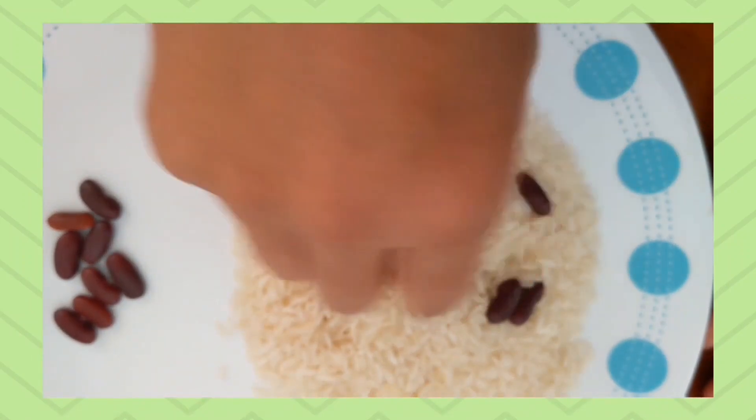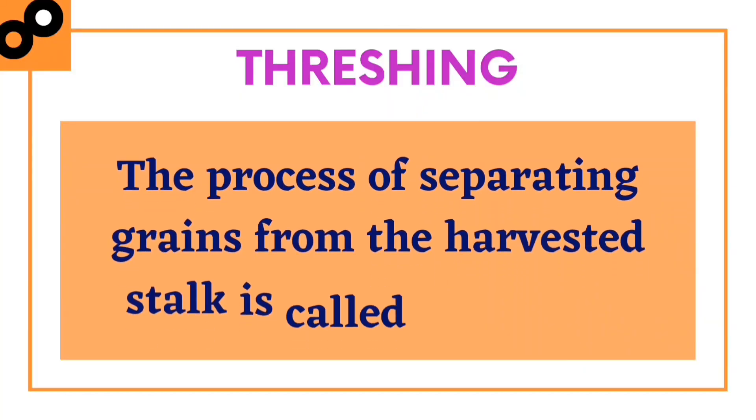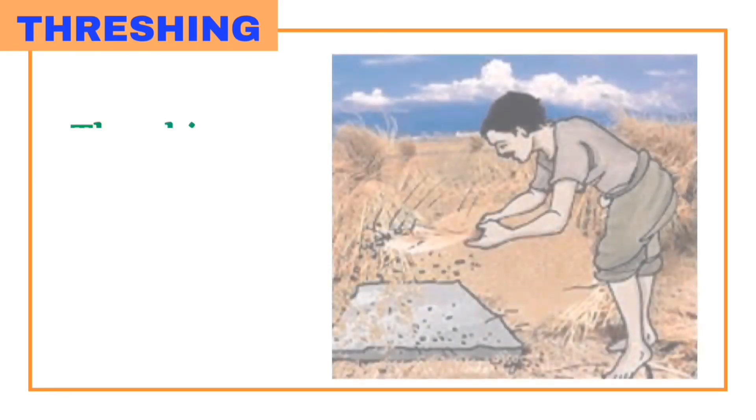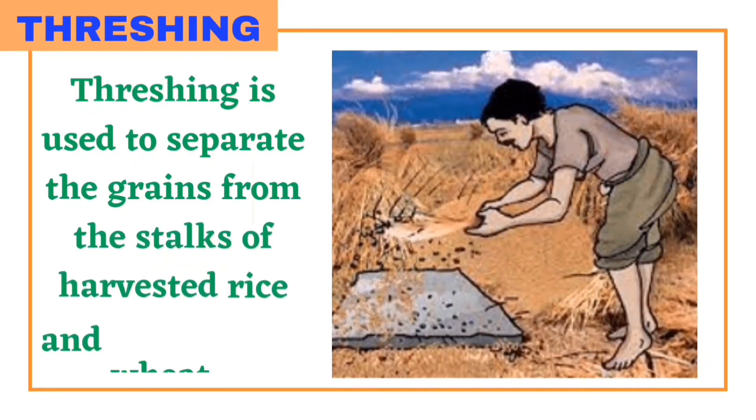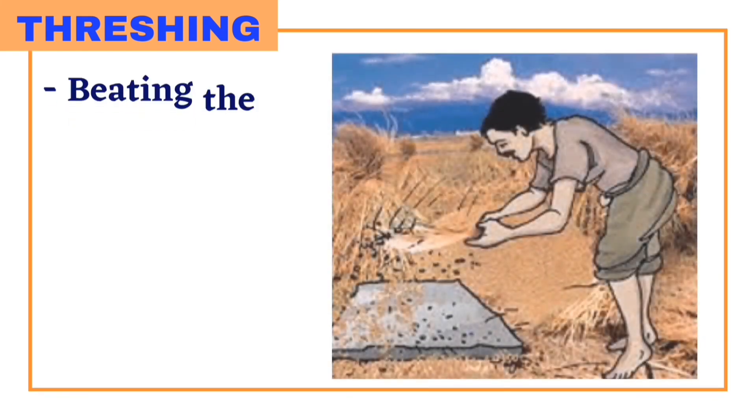Threshing is used to separate grains from harvested stalks of wheat or rice. In this process, stalks are beaten to free the grain seeds. Sometimes threshing is done with the help of bullocks, and threshing machines are also used to thresh large quantities of grain.